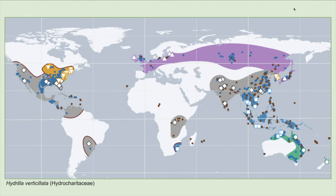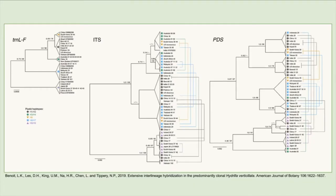I'll show you a phylogeny on the next slide. This is information largely known prior to our work. What we added was a substantial amount of data from nuclear regions: the Nuclear Internal Transcribed Spacer, or ITS, and another nuclear gene region, Phytoene desaturase, PDS. What we see from the ITS and PDS trees is a pattern of individual samples that have polymorphic sequences.